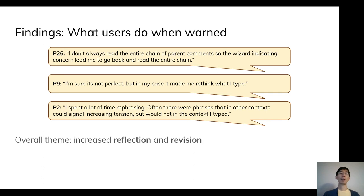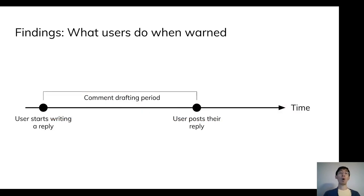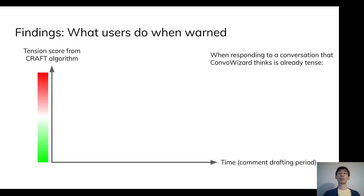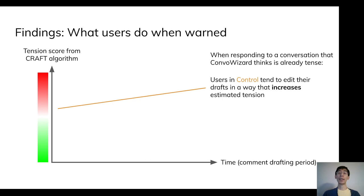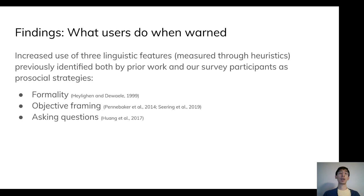We go on to ask whether we might be able to observe such behavior in the actual treatment versus control data. The answer is yes, along three core metrics. First, looking at the raw time spent drafting comments, we find that in the treatment condition this increases by about 9%. Second, when looking at how users respond to tense conversations, we find that their natural behavior in control is for tension to increase over the course of drafting the comment; by contrast, in treatment, this trend reverses and tension instead tends to decrease. Finally, we observe increased use of three linguistic features previously identified both by prior work and our participants as prosocial strategies.